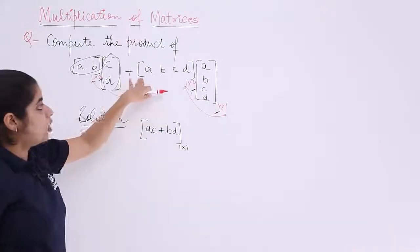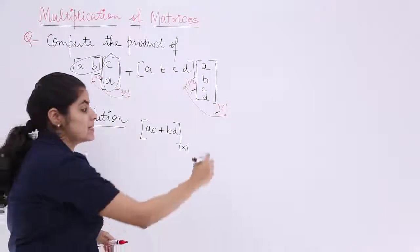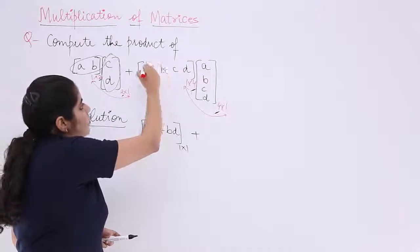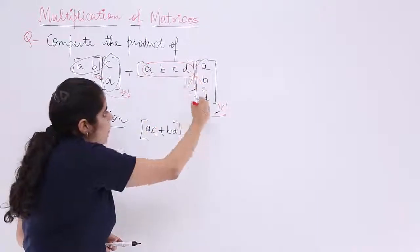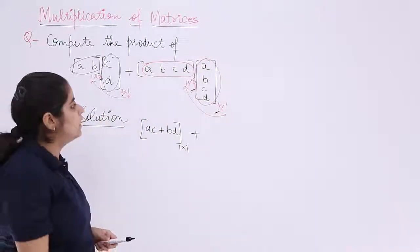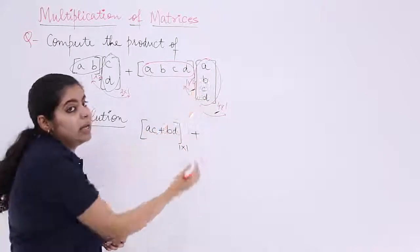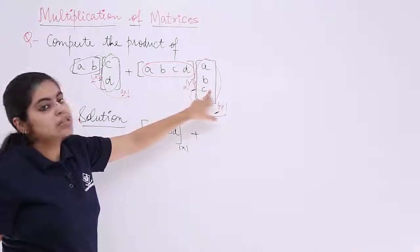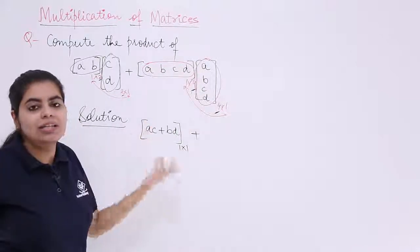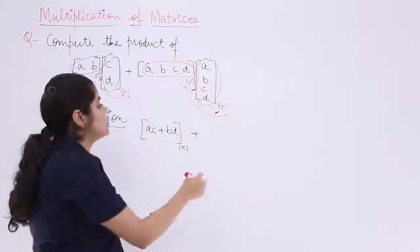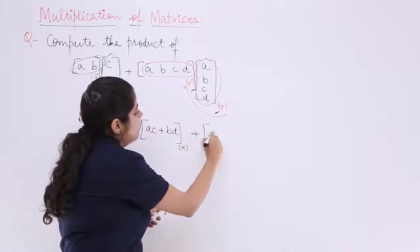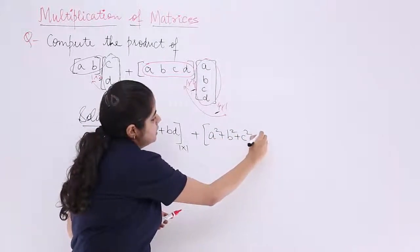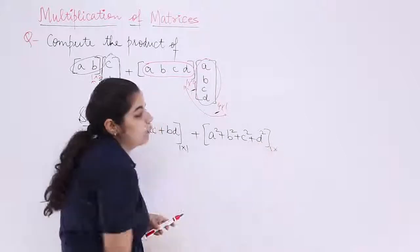For the second matrix product, separated by a plus sign, we multiply the whole row by the whole column. A×A is A², B×B is B², C×C is C², and D×D is D². So the result is A² + B² + C² + D², which is again a 1×1 matrix.